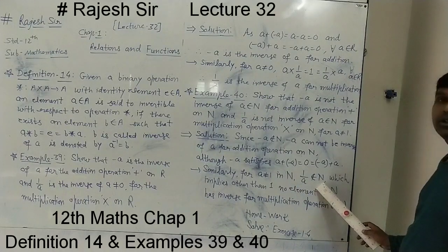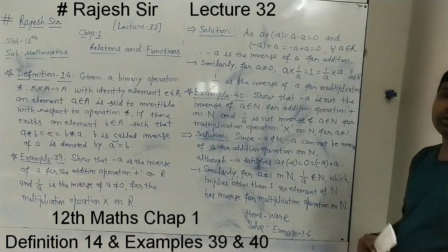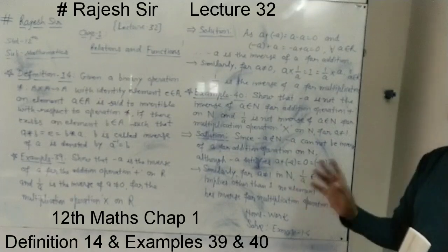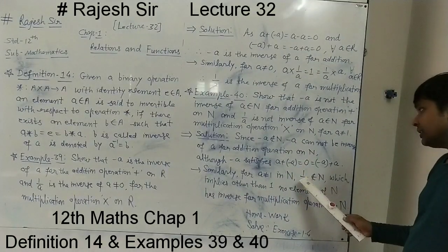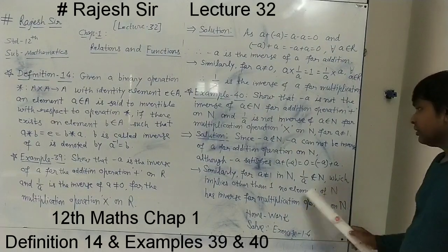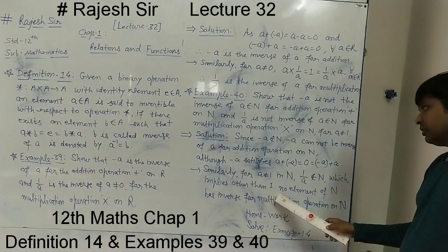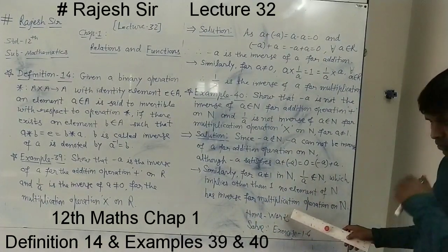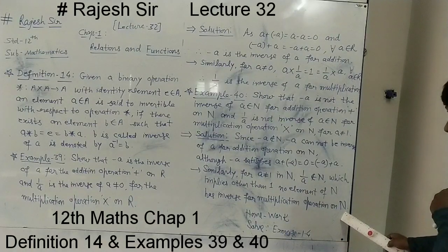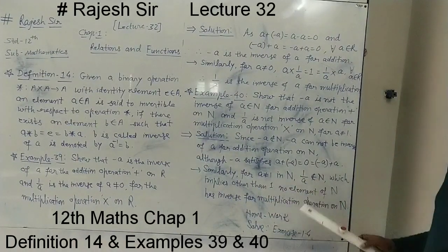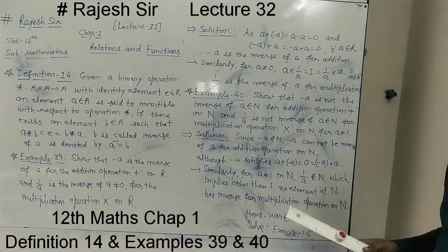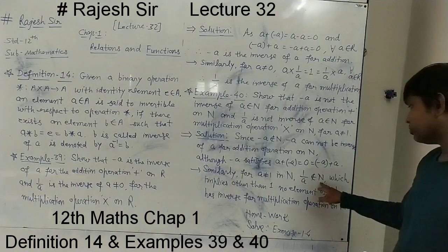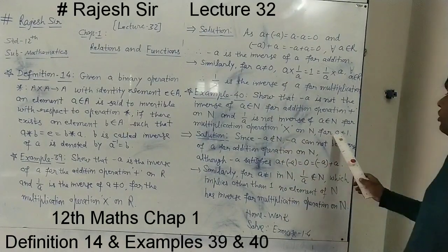Similarly, for A not equal to 1 in ℕ, 1 upon A will not belong to ℕ. For example, if 5 belongs to ℕ, then 1 upon 5 does not belong to ℕ. So for A belonging to ℕ, 1 upon A does not belong to ℕ, which means that other than 1, no element of ℕ has an inverse for multiplication operation on ℕ. Only 1 is the inverse of 1, but in the question A not equal to 1 is given.